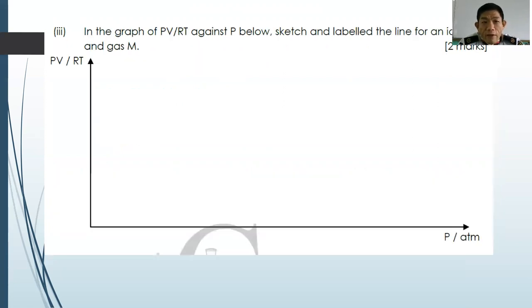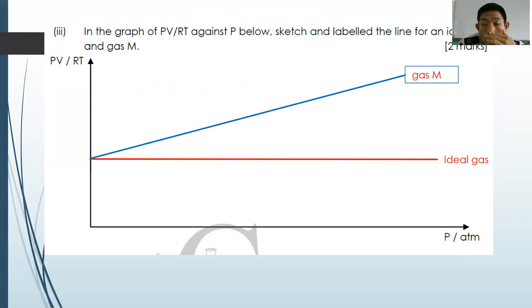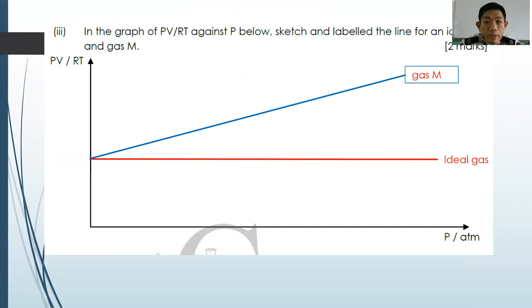For question 2A3, in a graph of PV/RT against P, sketch and label the line for the ideal gas and also for gas M. For an ideal gas, it is a straight horizontal line at PV/RT = 1. However, for gas M (helium), it is only ideal under room temperature and pressure. As pressure increases, it deviates positively from ideal behavior. Hydrogen behaves the same way.